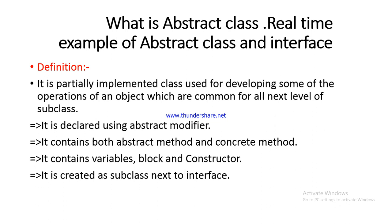An abstract class is declared using the abstract modifier. By using this modifier you can declare the abstract class. It contains both abstract methods and concrete methods, because it is a partially implemented class — partial implementation means methods with body and methods without body. A concrete method is simply a regular method with a body. It can also contain variables, blocks, and constructors inside the abstract class.